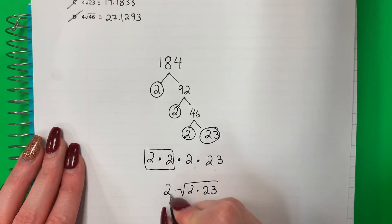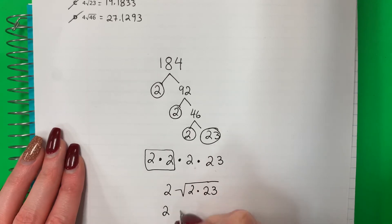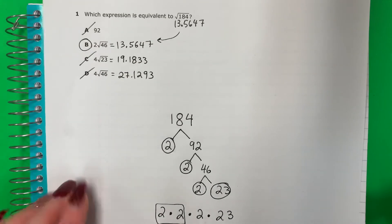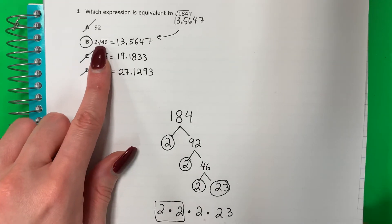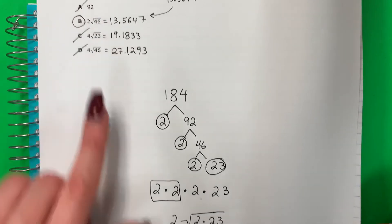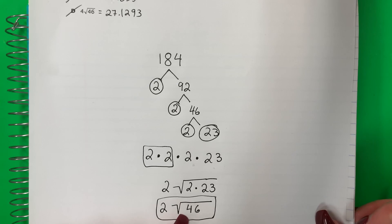Let's simplify. Vamos a simplificar. So copy 2. Copy square root. 2 times 23. Dos por 23. 46. And this is my answer. It's the same. Es lo mismo. 2, 46. 2 square root of 46.